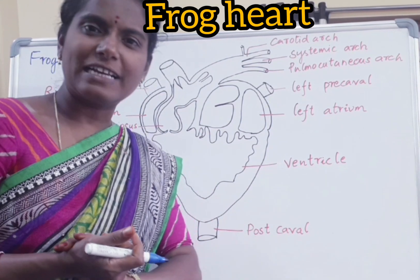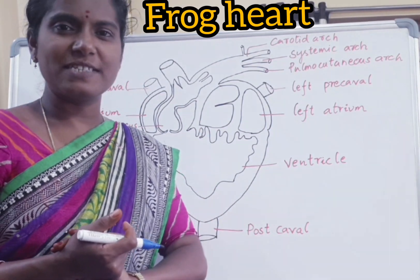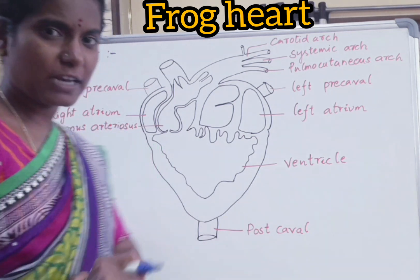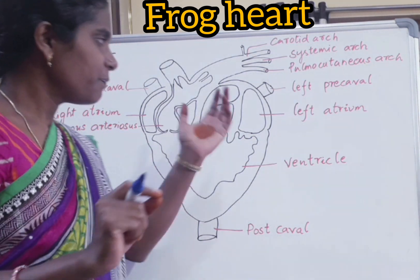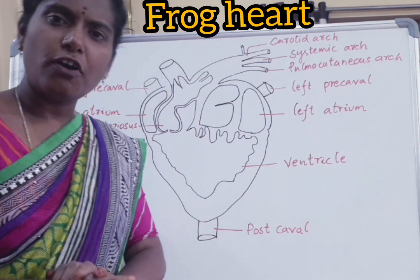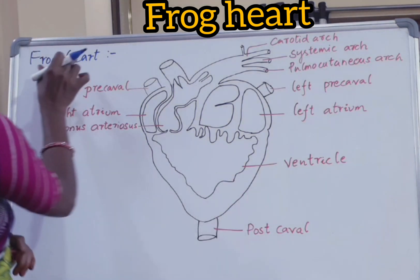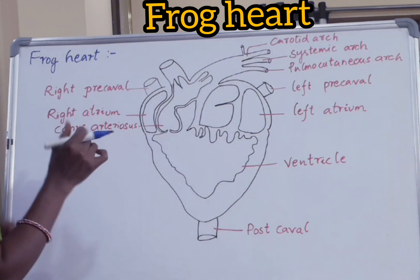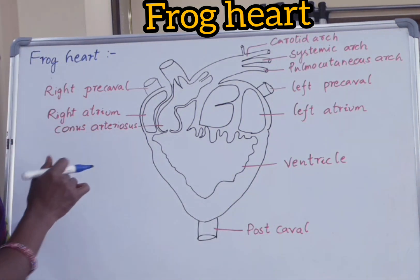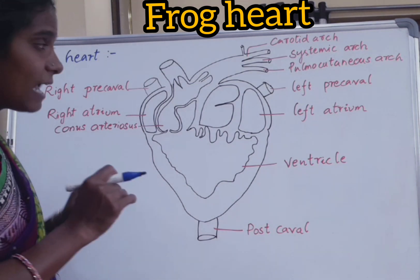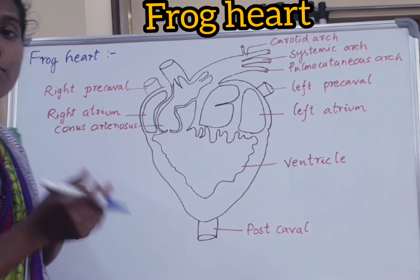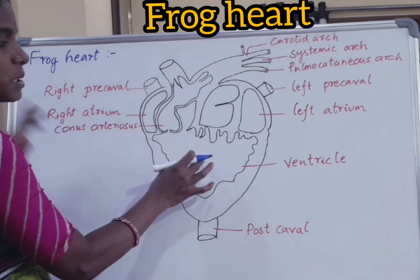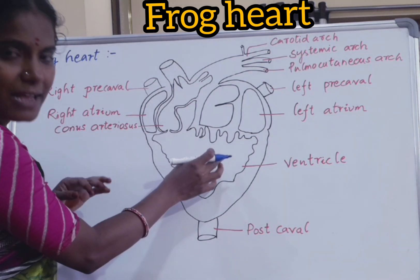Hello Trendy viewers, welcome to Trendy Achievers channel. Now we are going to discuss a very important concept in NEET as well as IPE of biology — that is frog heart. Frogs are said to be amphibians that live both on land as well as in the water, and they consist of a muscular heart.